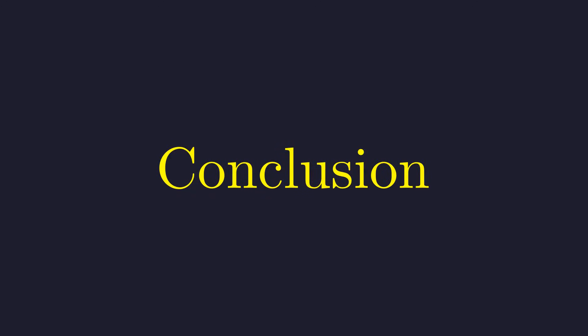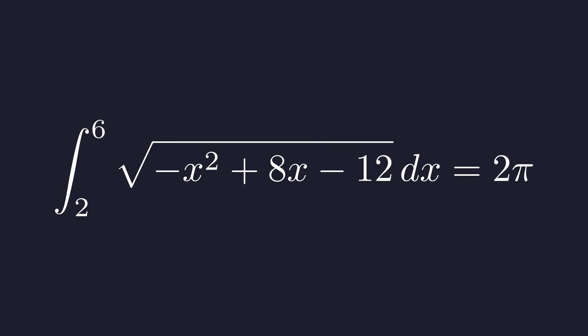Let's state our final answer clearly. By recognizing the integral as the area of a semicircle, we found its value to be 2 pi, avoiding a much more difficult direct integration. This problem beautifully illustrates the power of geometric interpretation in calculus.